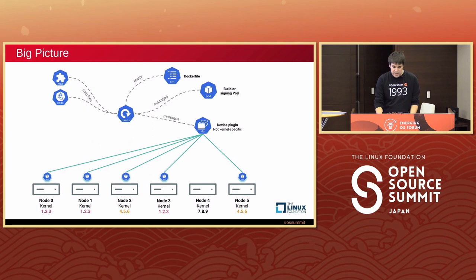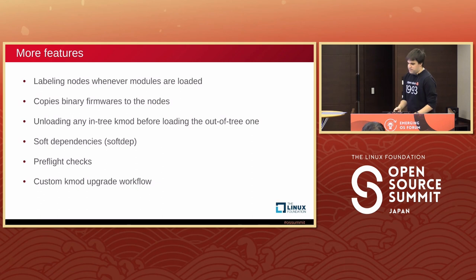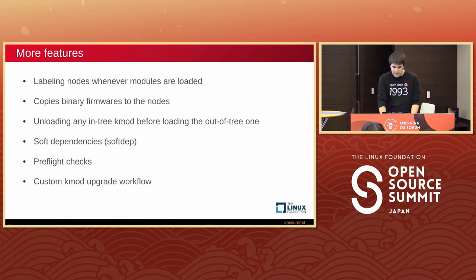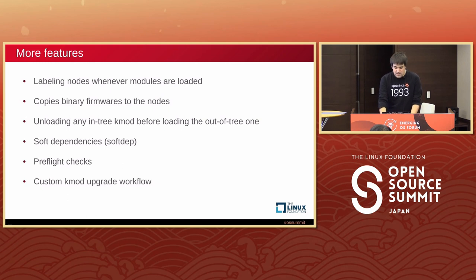Something new in version 2.0 of KMM — just released yesterday — is that once the kmod is loaded, the loading pods disappear. The kmod stays loaded on the node but the loading pods are gone, saving a lot of resources. KMM also labels nodes whenever a kernel module is loaded, which is very useful. It also copies firmware files from the kmod image directly onto the node, so your kernel module is able to load the firmware files it needs.